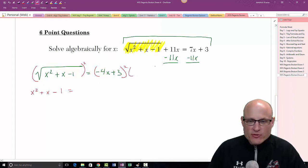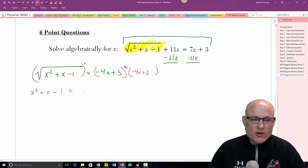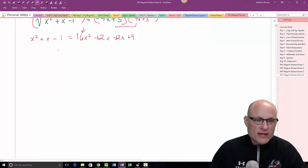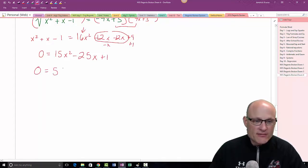x squared plus x minus 1 equals - now double distributing this, remember squared means we got to write it twice. Negative 4x times negative 4x is positive 16x squared. This is minus 12x, this is also minus 12x, plus 9. Everything's coming to that side, so I get 0 equals 15x squared minus 25x plus 10. 0 equals 5 times 3x squared minus 5x plus 2. There is a GCF, so I'm going to take it out.